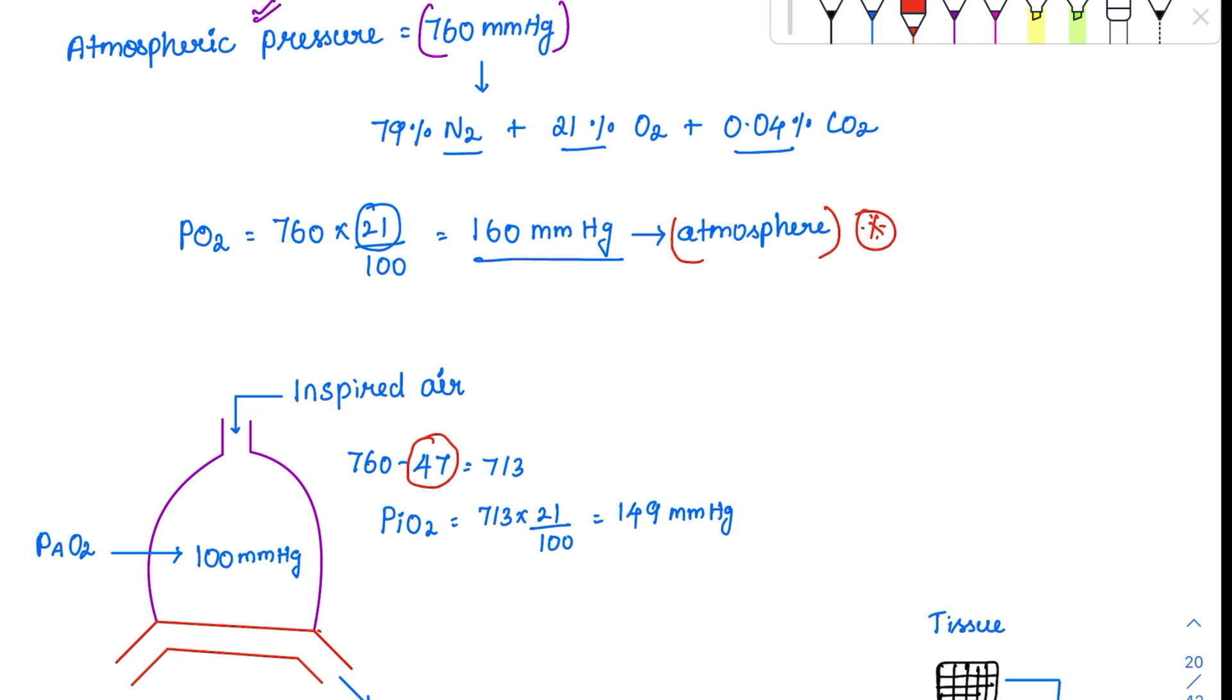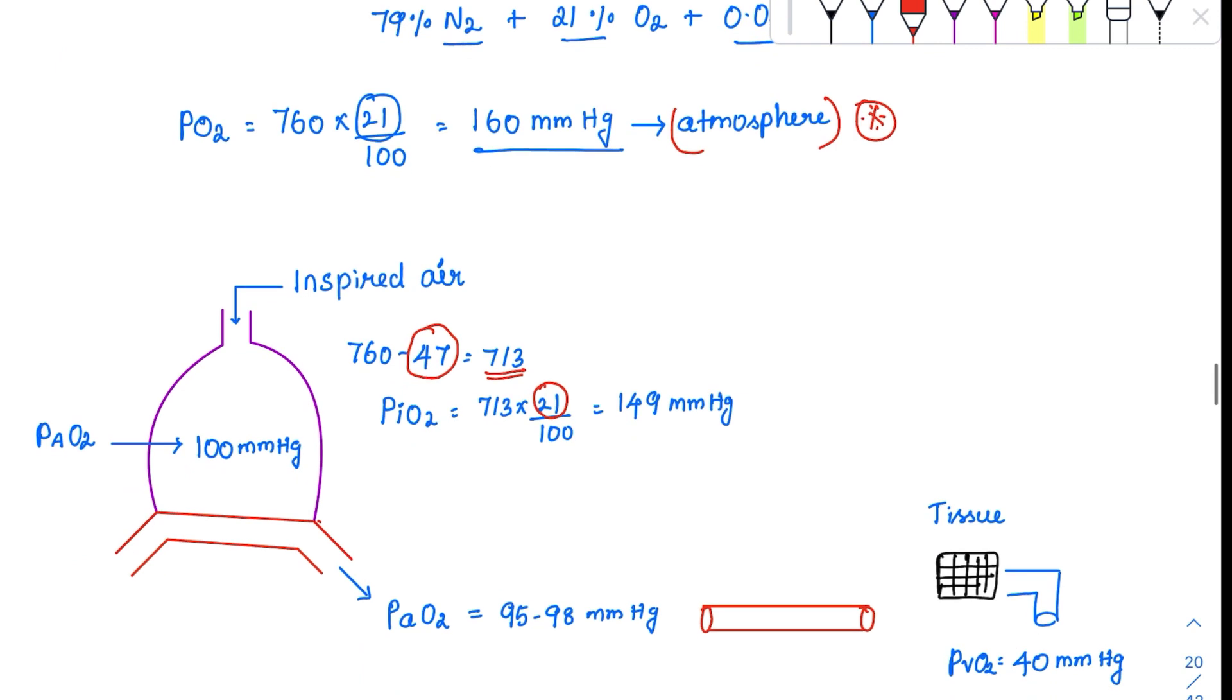So what will happen is the total partial pressure of gas is 713. And out of this, 21% is our oxygen. So which brings the inspired air oxygen to around 149 mm Hg. From 160, the inspired air, it has become 149.